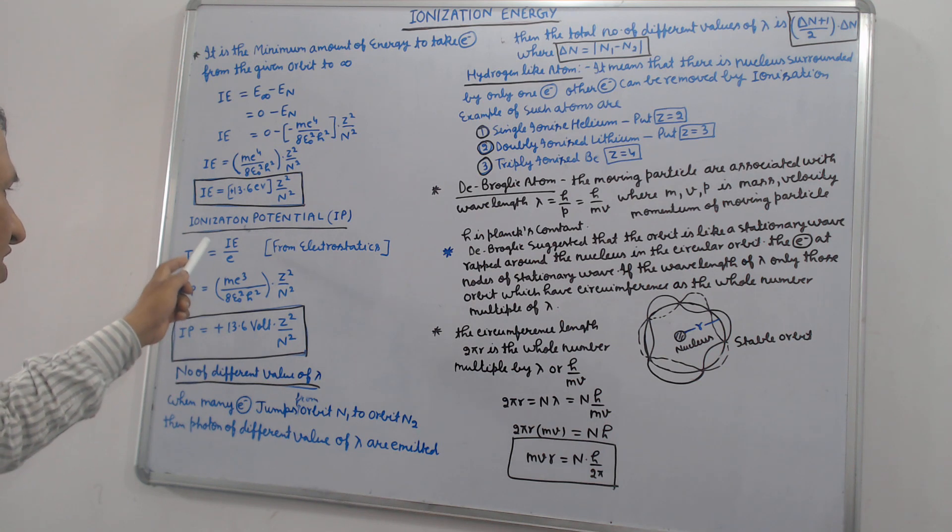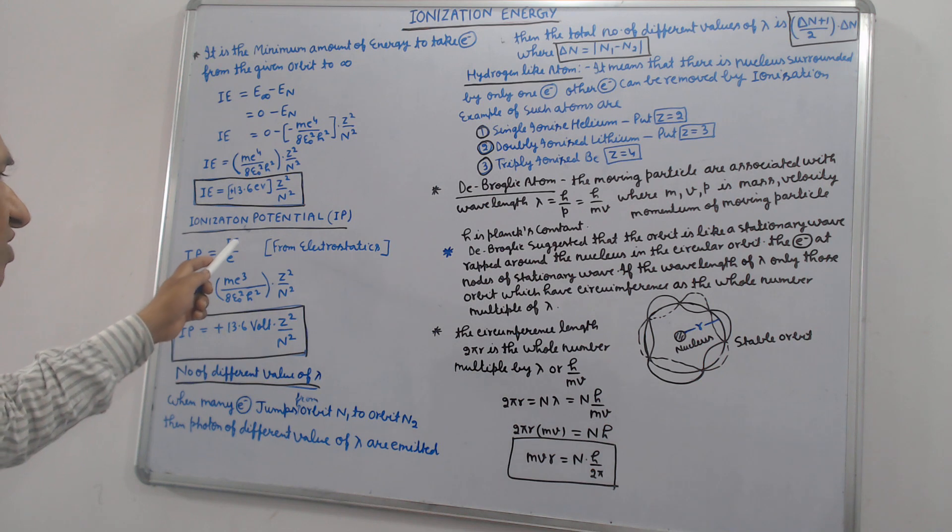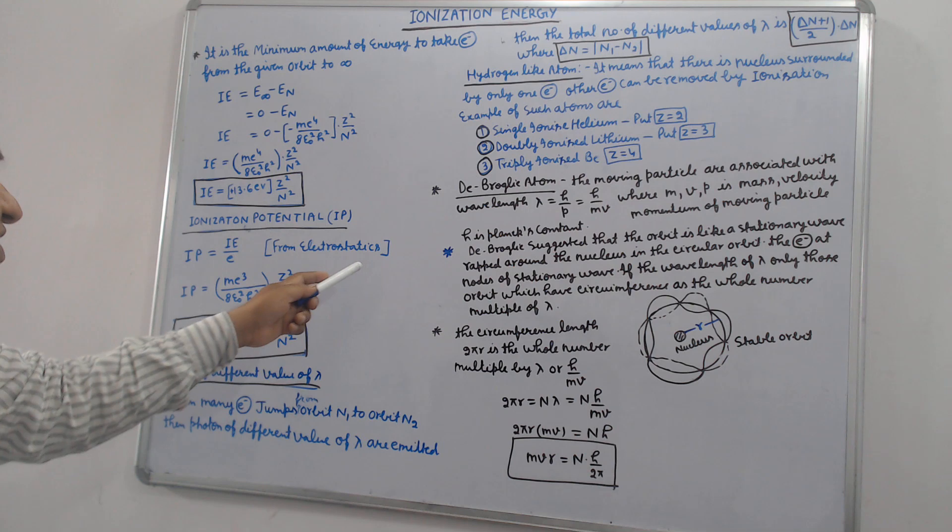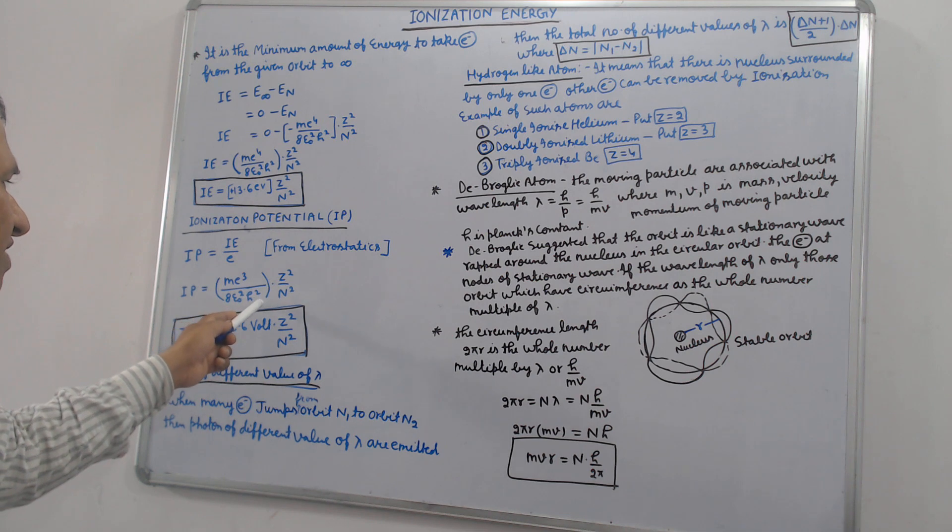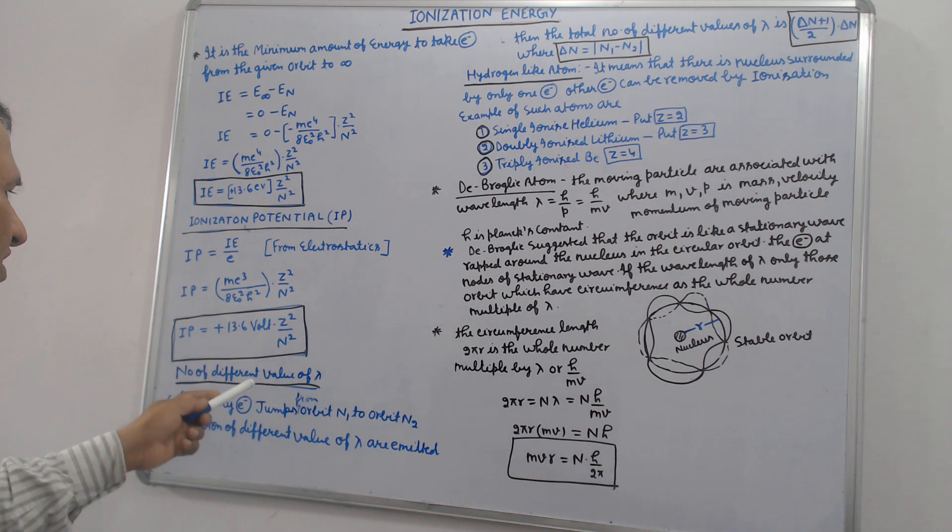Ionization potential equals energy upon charge. Ionization potential equals ionization energy upon electronic charge e. From electrostatics, ionization potential equals Me³ upon 8ε₀² h² Z² by N². Putting the values, ionization potential equals plus 13.6 volt Z² by N².